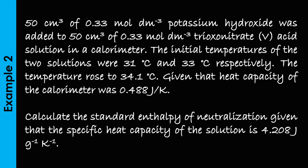Example 2: 50 cm³ of 0.33 mole per dm³ potassium hydroxide was added to 50 cm³ of 0.33 mole per dm³ nitrate(V) acid solution in a calorimeter. The initial temperatures of the two solutions were 31 degrees Celsius and 33 degrees Celsius respectively. The temperature rose to 34.1 degrees Celsius, given that the heat capacity of the calorimeter was 0.488 joules per kelvin.